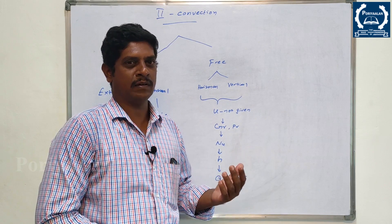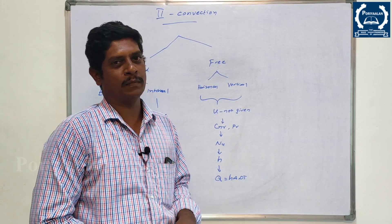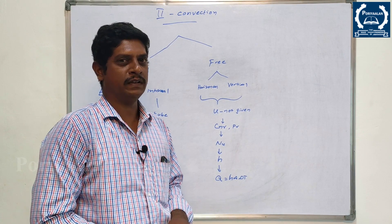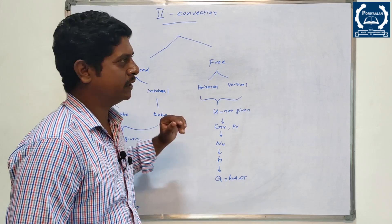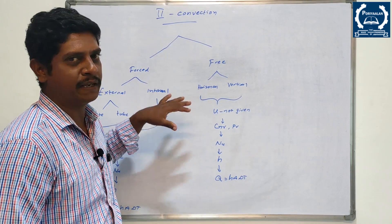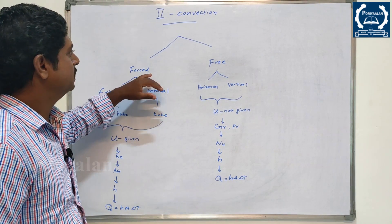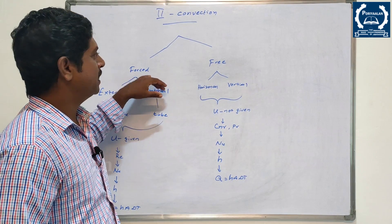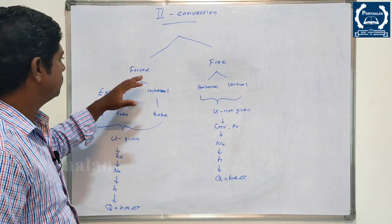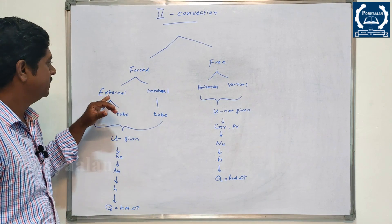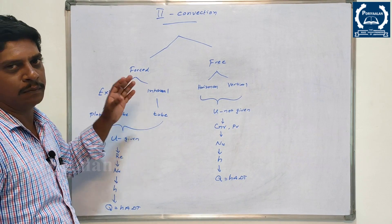If there are any problems, we can solve a sample problem. Unit 2 is complete. We can classify this — that is, forced convection and free convection. For forced convection, external flow and internal flow are the two problem types.